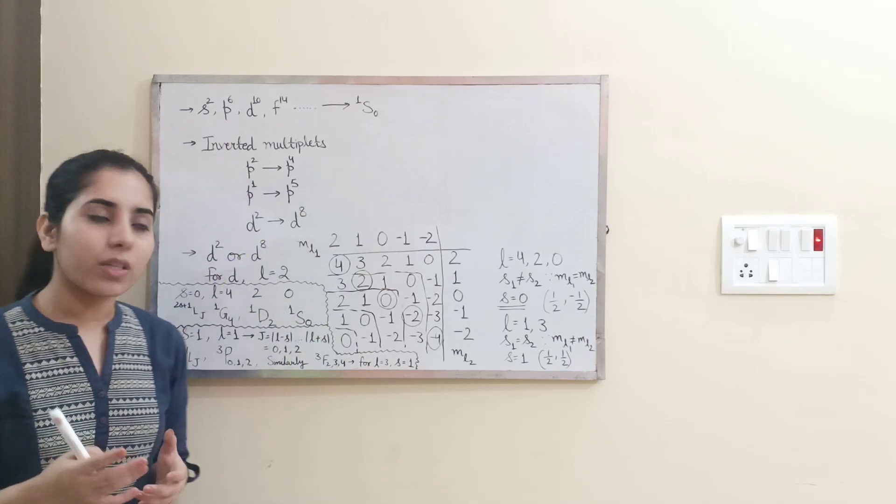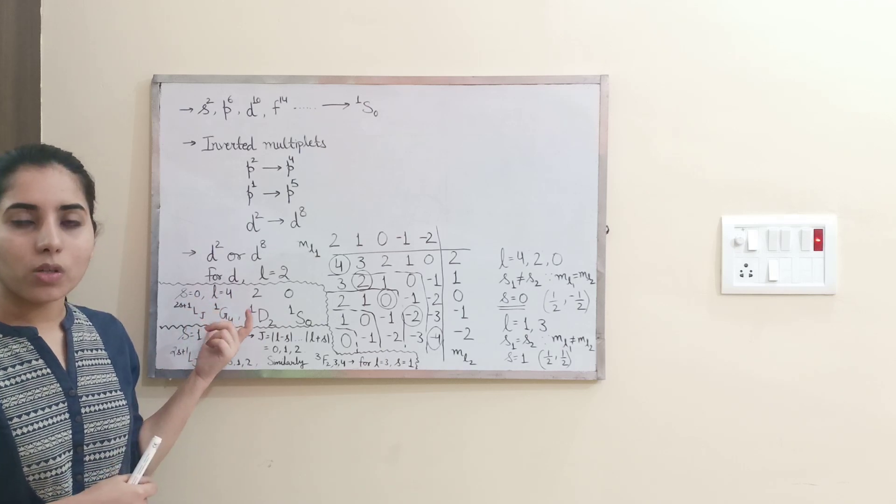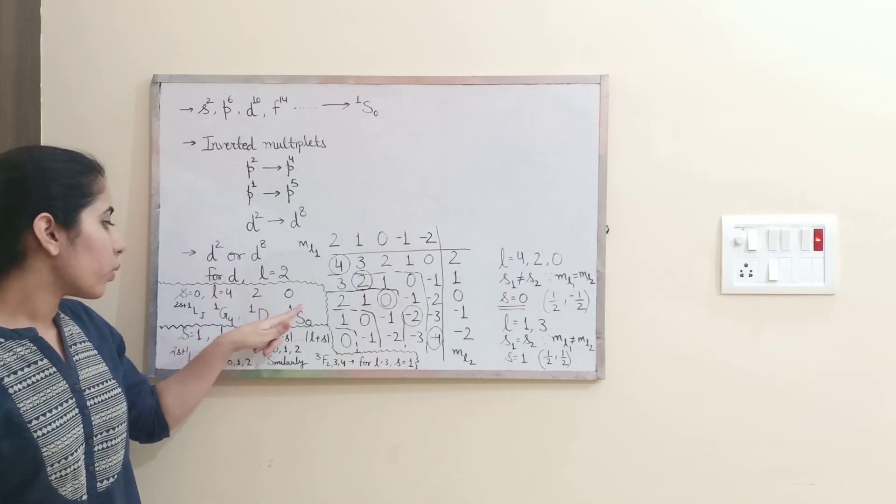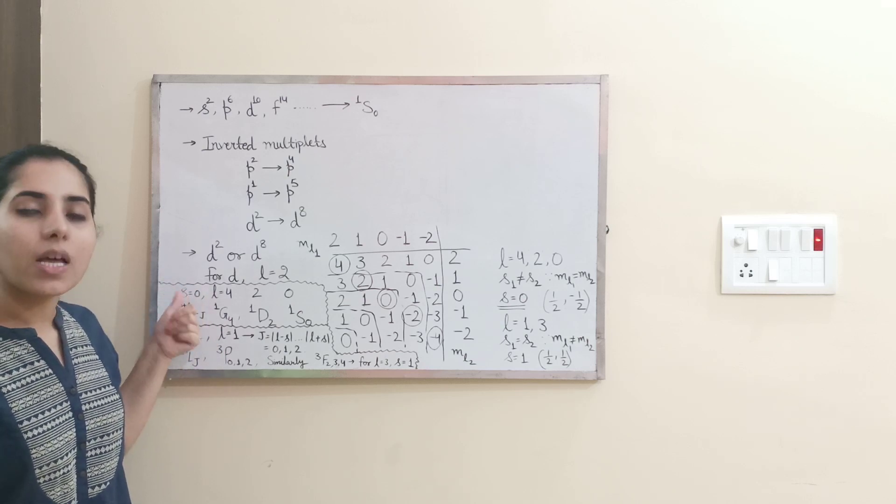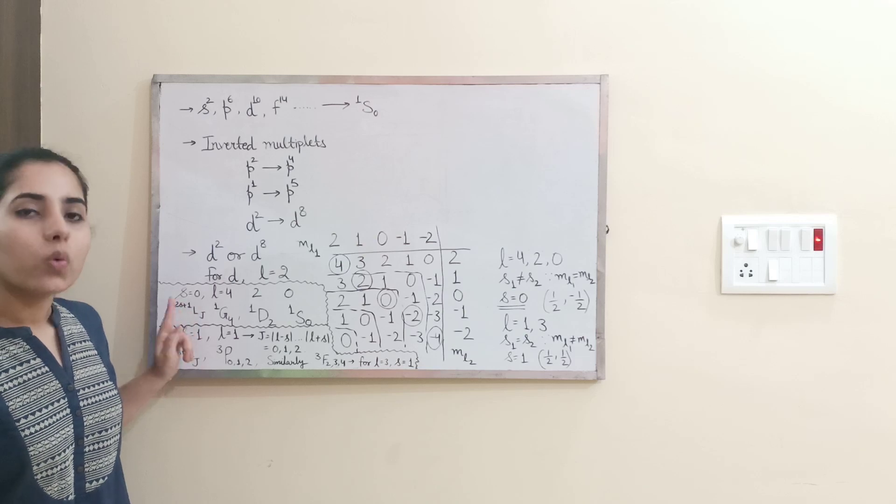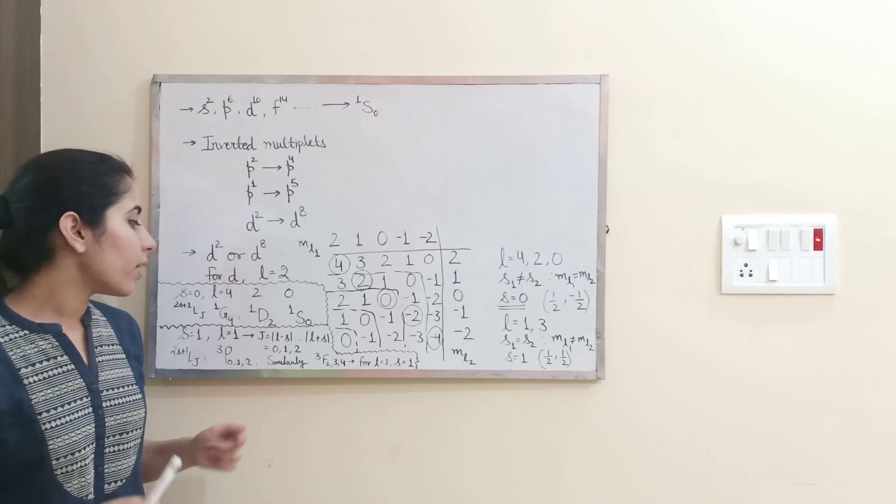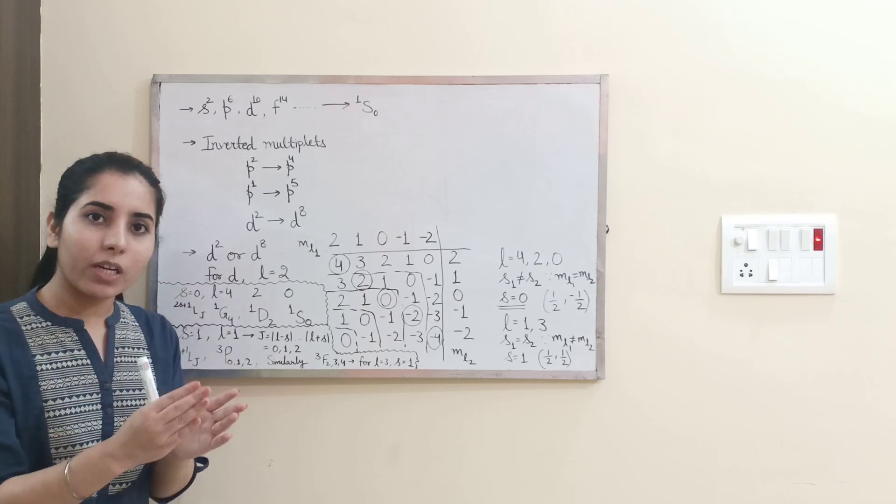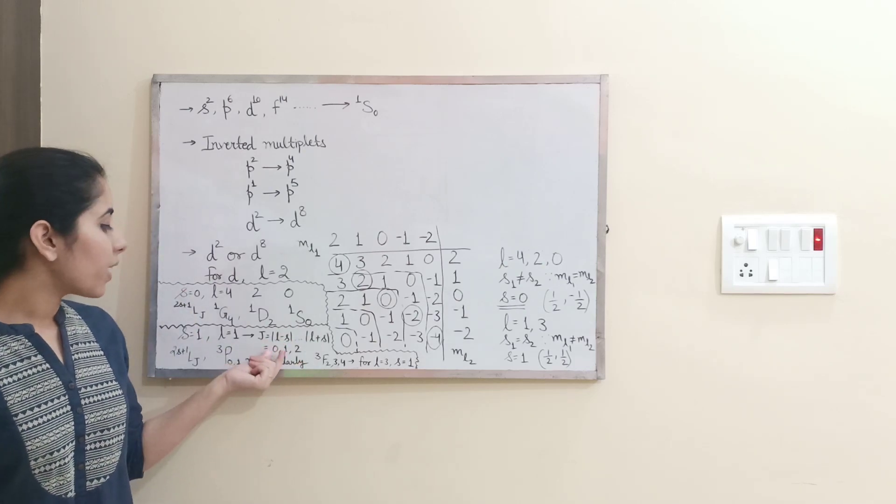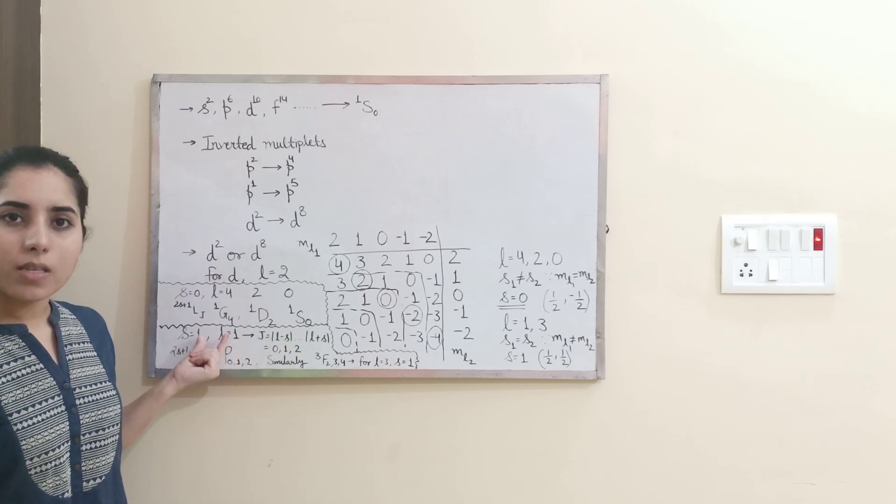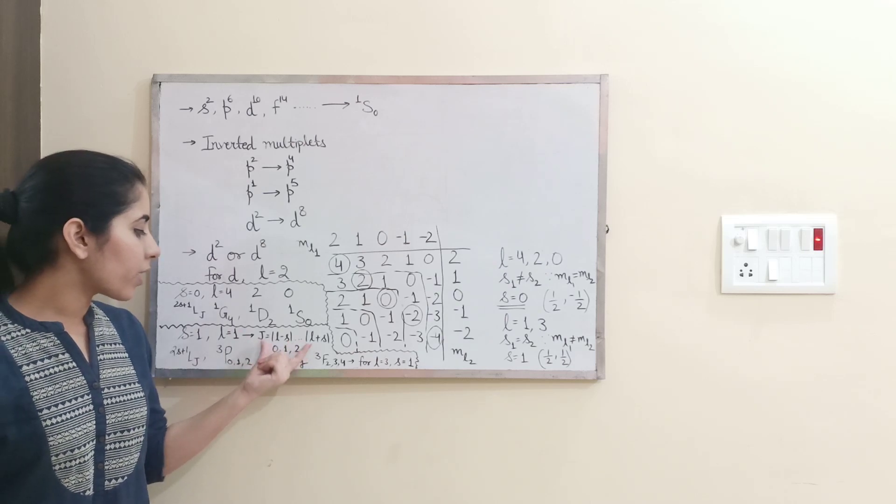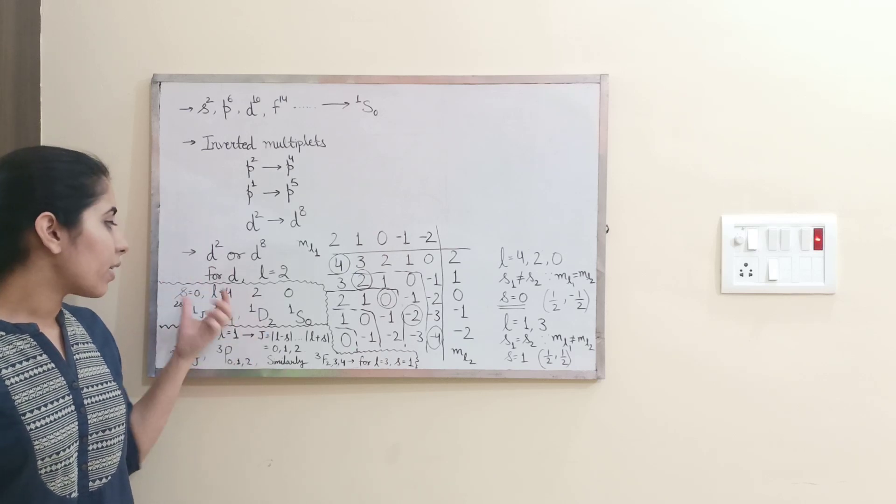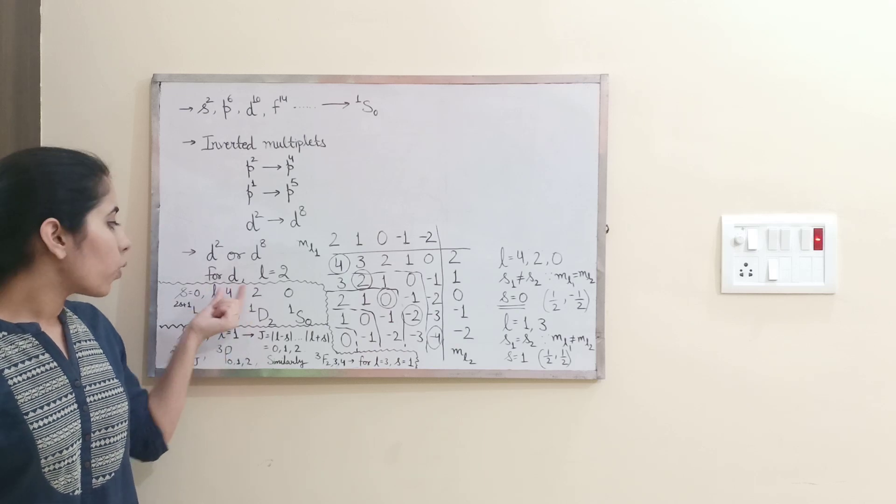Next thing. Corresponding to these values, how we will write the spectroscopic terms? So guys, for that, we have followed the procedure here. For S is equal to 0, L can be 4, 2 and 0, clear? So I have noted down here. Then I have written the spectroscopic terms by using the symbol that is 2S plus 1, LJ. Where J is the angular momentum quantum number, its value will be between L minus S to L plus S. Not just in between values, even including the extreme values, clear? So you will get 0, 1 and 2 for this case, when you are having S is equal to 1 and L is equal to 1.